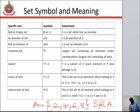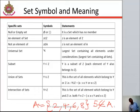Also, we have a subset. We can say that even numbers is a subset of natural numbers. As you can see on the screen, Y is a subset of Z — that is, each element of Y also belongs to Z.